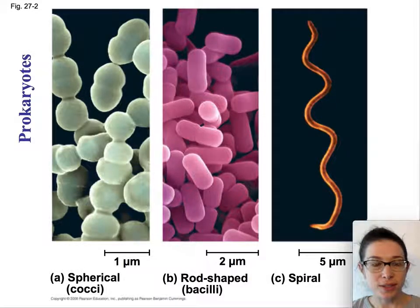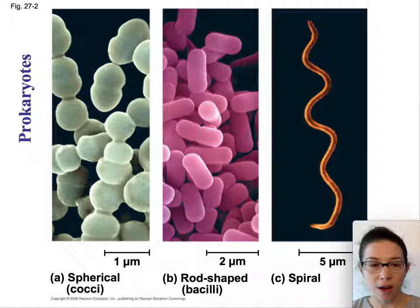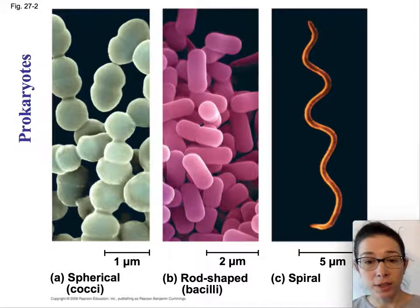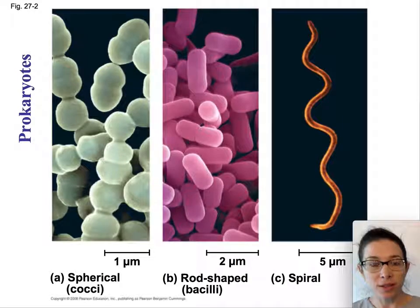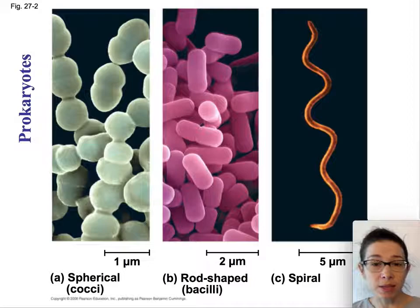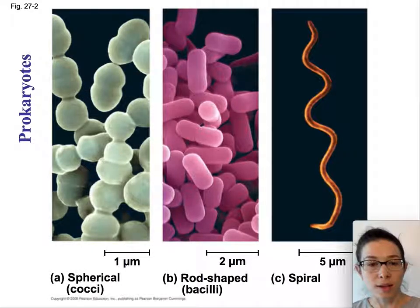If you see the spherical shaped ones, underneath it says cocci. Some of these terms might be somewhat familiar, like cocci. When we talk about staphylococcus, which might be a bacteria you've heard about before, you can see that root of the name. In the center, we have something that looks kind of like E. coli, and you can see that E. coli is a bacilli shape.